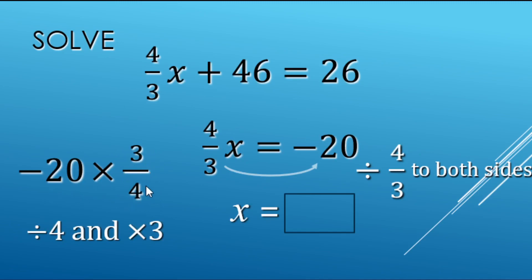Negative 20 divided by 4 makes negative 5. We're doing this in our head.